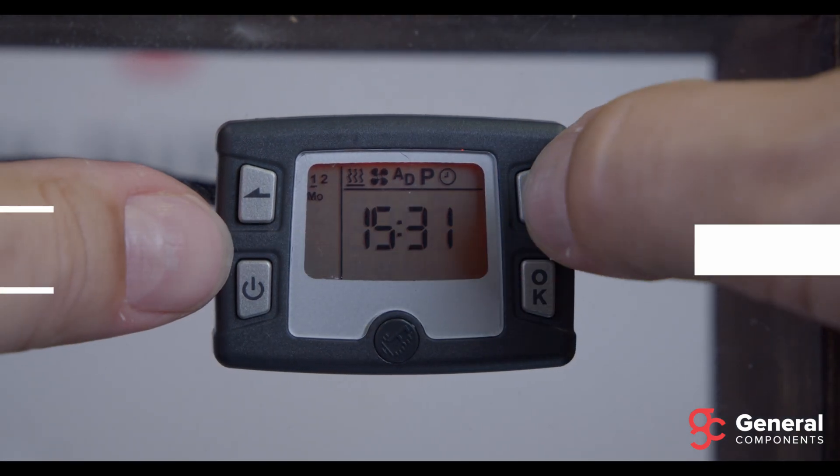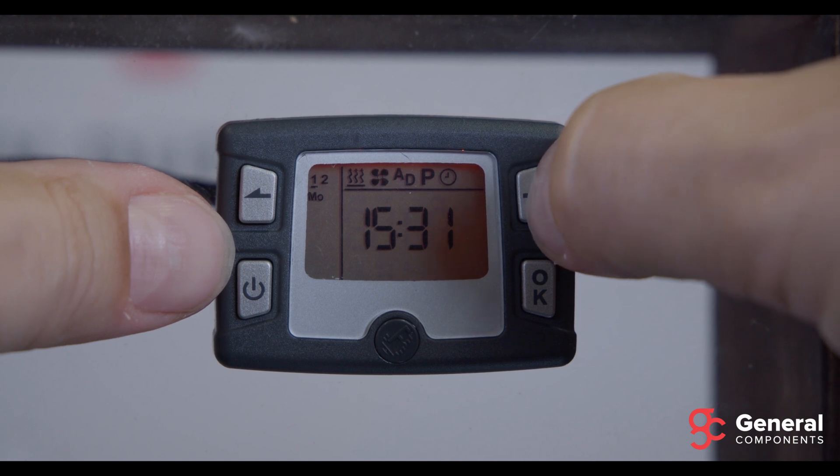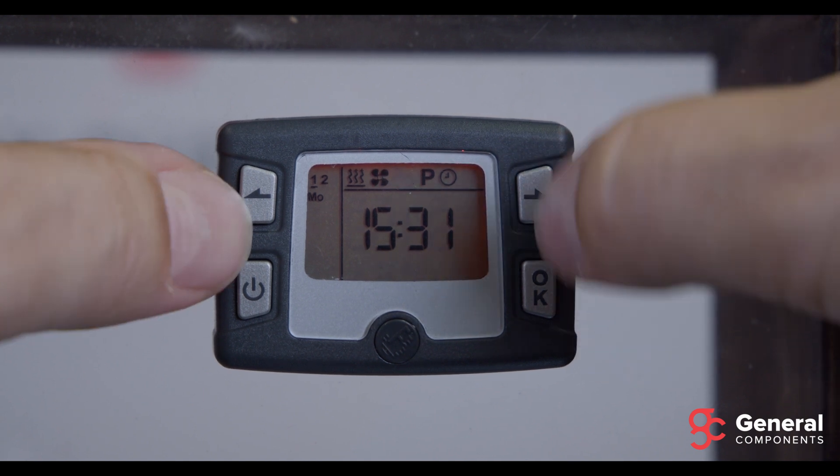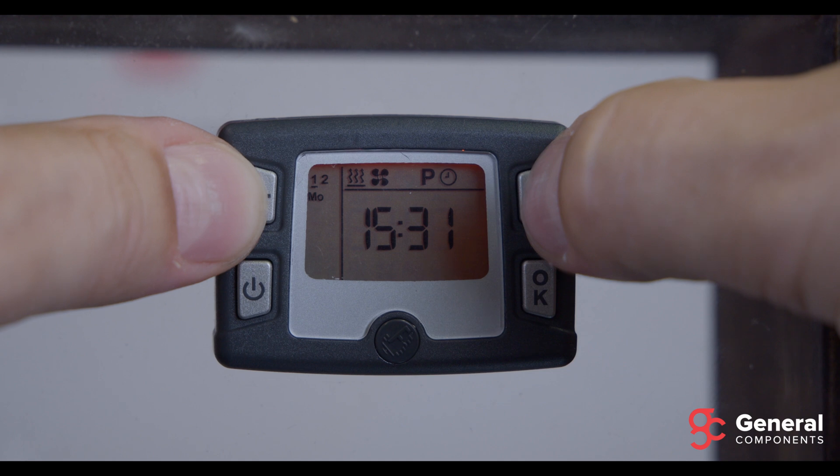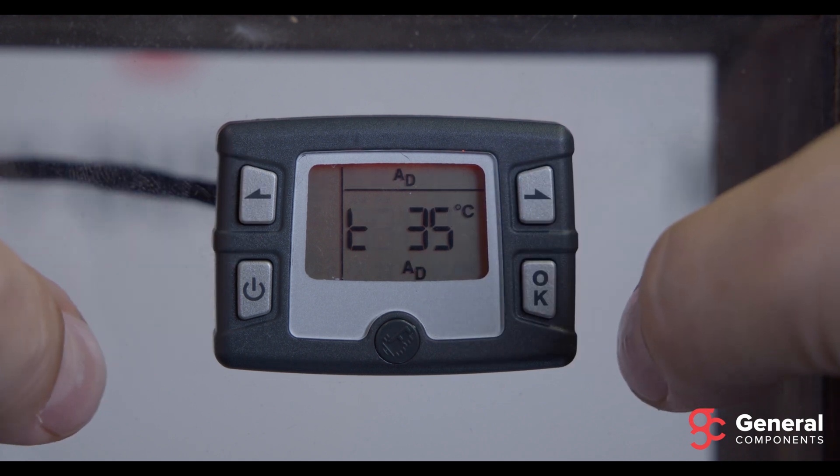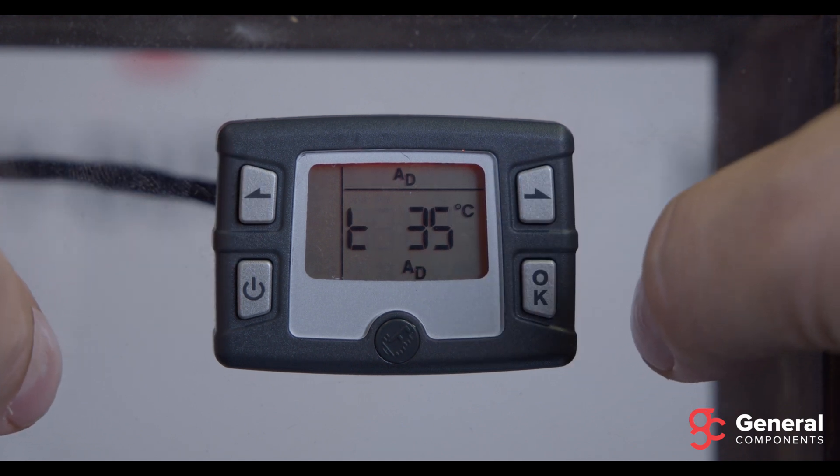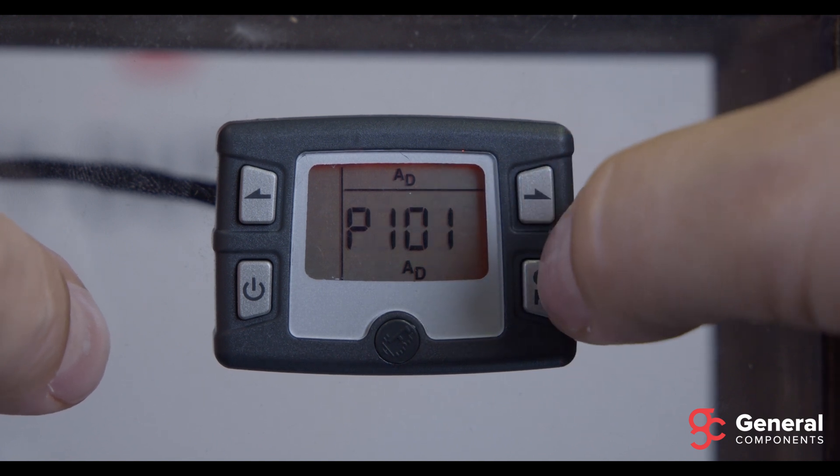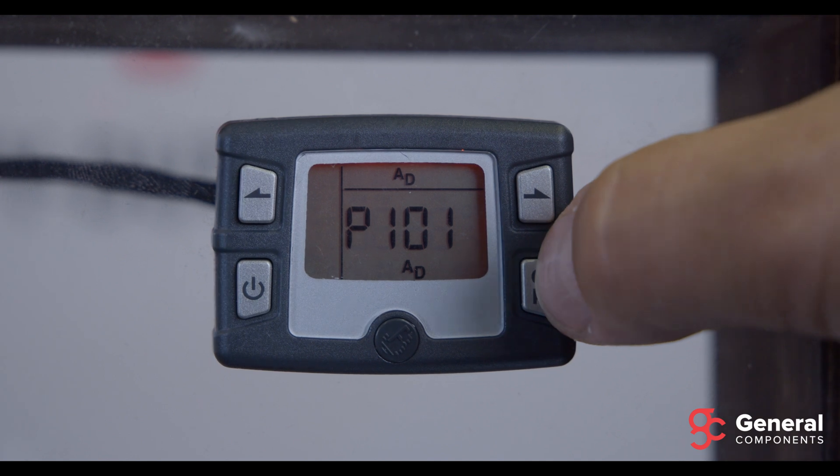And the last thing I want to show you is how to read the current temperature and atmospheric pressure. Just navigate to the AD icon, hit OK, and you can see that it's showing 35 degrees Celsius at the moment and 101 kilopascals of atmospheric pressure.